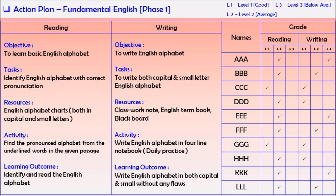Objectively, to learn basic English alphabet. Task: identify English alphabet with correct pronunciation. If you want to say J, A, I, it is difficult to pronounce, so you can identify the correct alphabet.